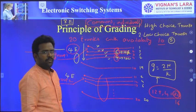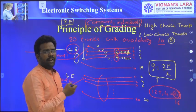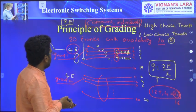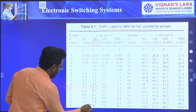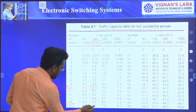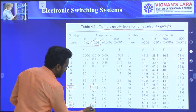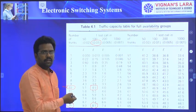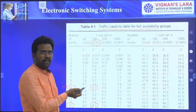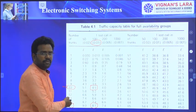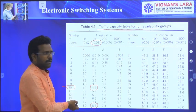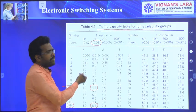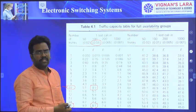With the help of 16 trunks, we are handling 8 Erlangs traffic. From the table, for 15 trunks we can handle 8.1 Erlangs, so it is somewhat better than the previous case. There it was 10 trunks for 4.5 Erlangs; here it is 16 trunks for 8 Erlangs. Compared to this, it is a better design — good grade of service with fewer trunks.